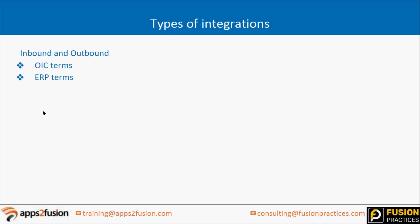A participant confirmed: inbound means data coming into ERP, whether R12 or Fusion, and outbound means going outside from Oracle Fusion - which is correct. When we talk about ERP terms, OIC does two jobs at a time: it gets data from some other location and pushes it to Oracle. Going forward, when we say inbound integration, it means OIC will fetch data from a third-party system and insert it into Oracle Fusion ERP. Outbound means taking data from Fusion and sending it somewhere else.